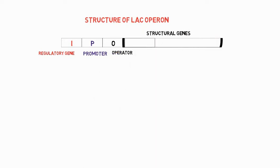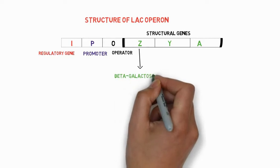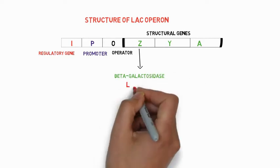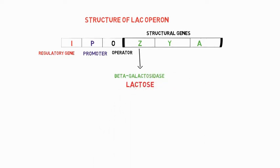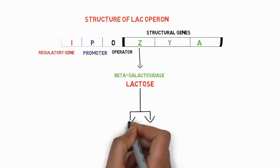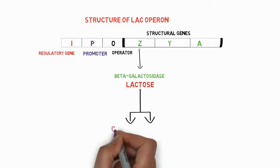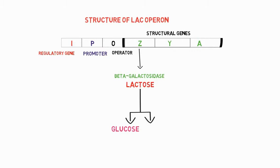The first one is structural gene Z. Second one is structural gene Y and third one is structural gene A. Structural gene Z codes for the enzyme beta-galactosidase. This beta-galactosidase breaks down the lactose into glucose and galactose molecules.